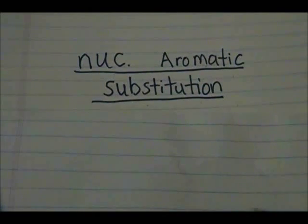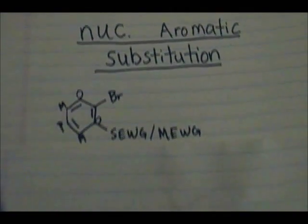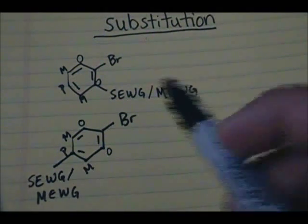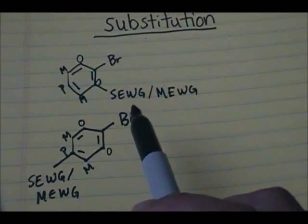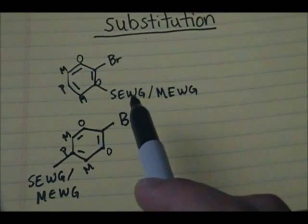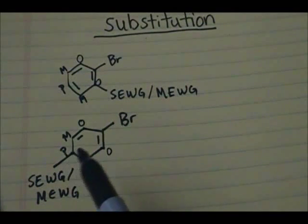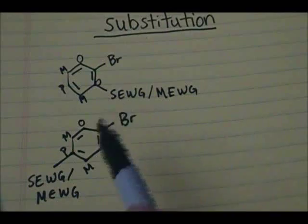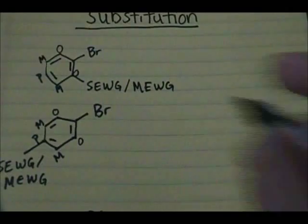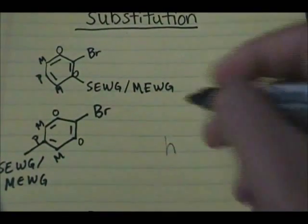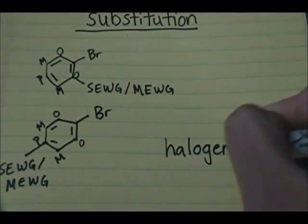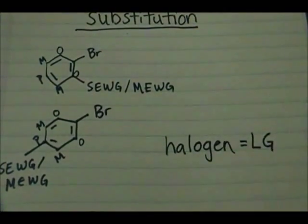So let's get started into this topic. The main thing you need to know is that this reaction only occurs when you have a halogen and a strong electron withdrawing group or a moderate electron withdrawing group in the ortho or para position relative to the leaving group. The halogen equals your leaving group.